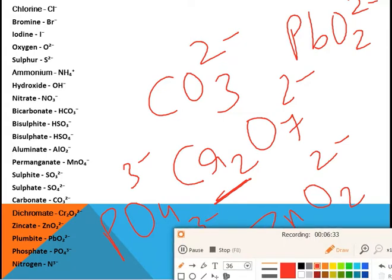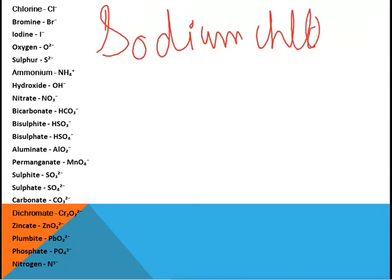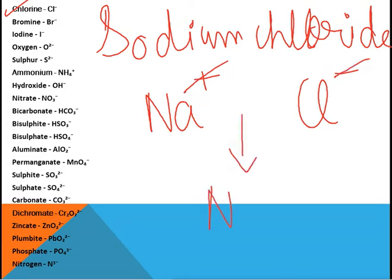Now let's learn how to write chemical formulas. Suppose I want to write the formula for sodium chloride. The symbol of sodium ion is Na⁺ and chloride ion is Cl⁻. You can see that the charges at the top are equal and opposite, so we can cancel them out, and the final formula is NaCl.